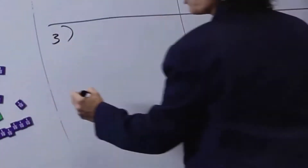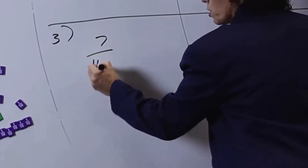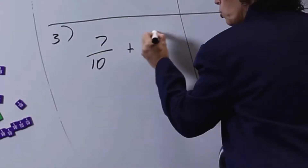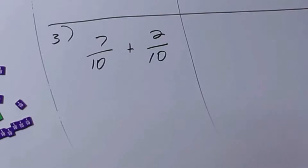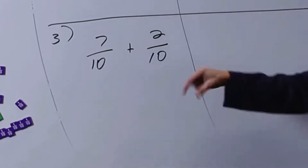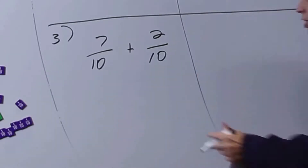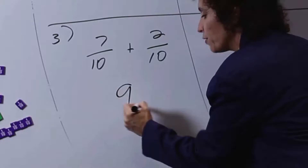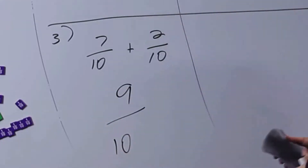This next one says 7 tenths plus 2 tenths. No manipulatives, I think we can do it. 7 tenths plus 2 tenths — if I have 7 of the little pieces plus 2 more of the little pieces, what do I have? I have 9 of the little pieces. 9 tenths.